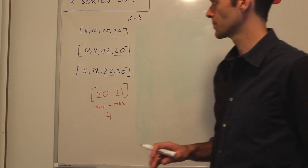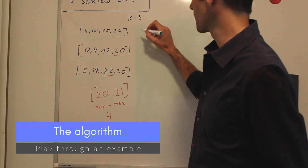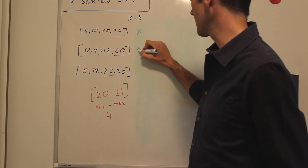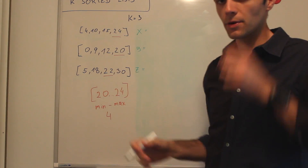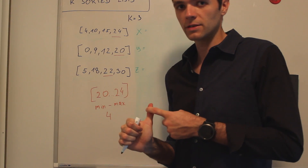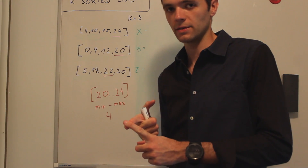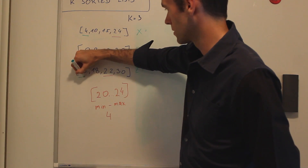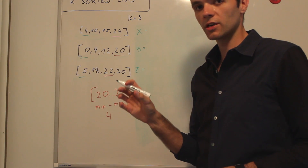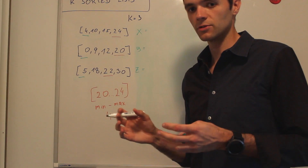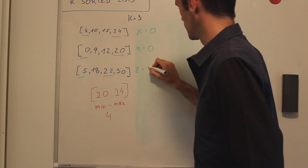Let's look at the actual algorithm. We're going to keep track of a pointer in every list — so K pointers. In this case we're going to call them X, Y, and Z. This is going to be an iterative approach where we step through the lists. We're looking for the minimum element and the maximum element under each pointer. At each step, we're going to calculate the range, which is max minus min, and we're going to see if our globally found range is bigger than the newly found range.